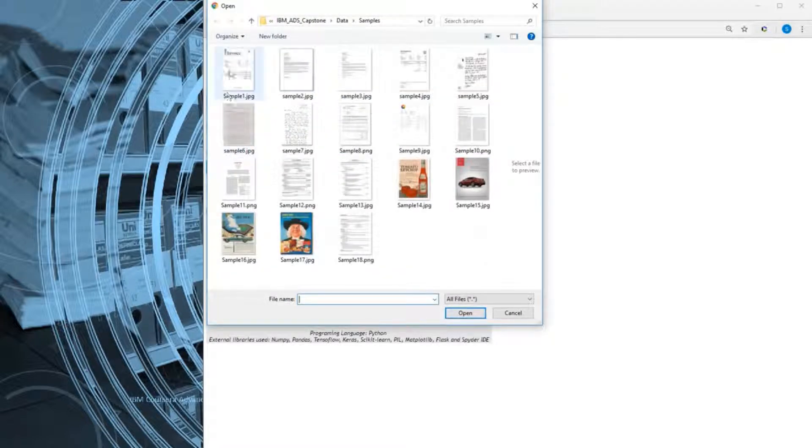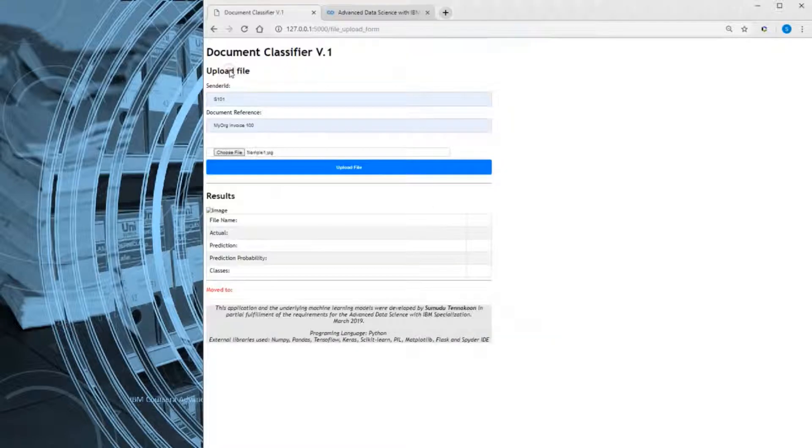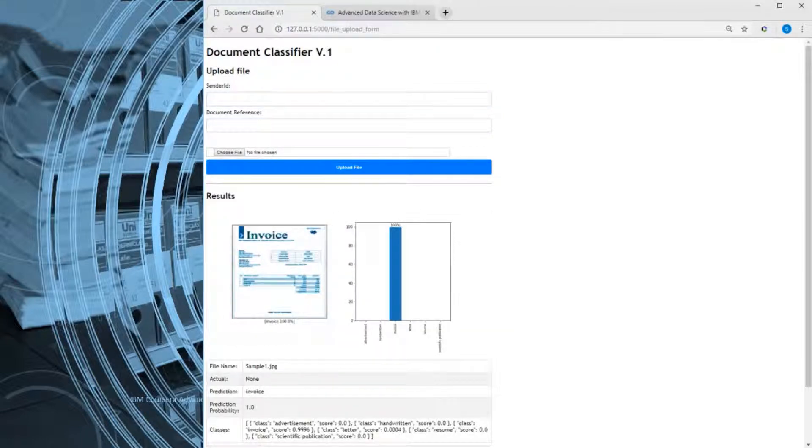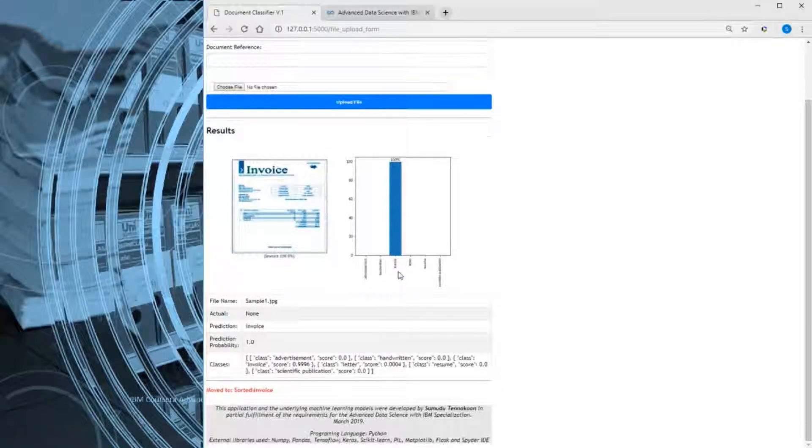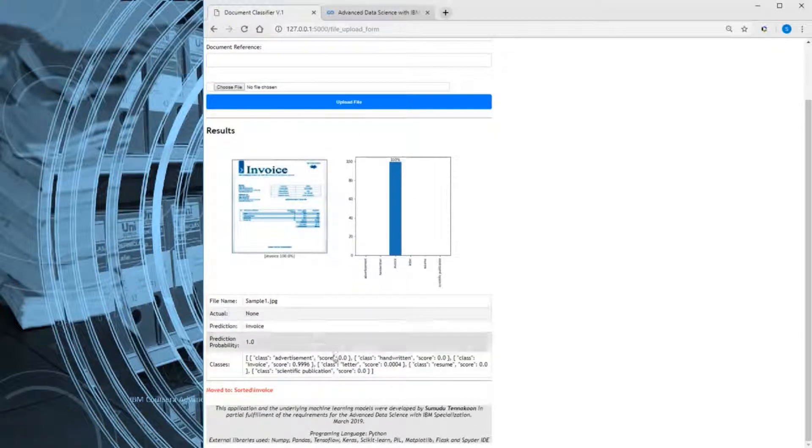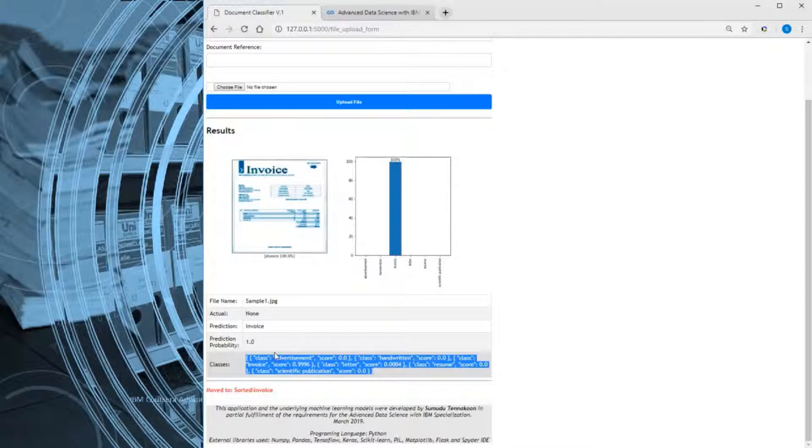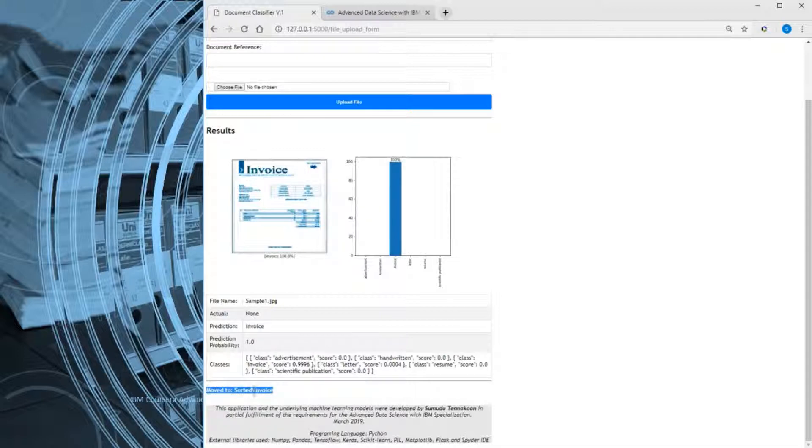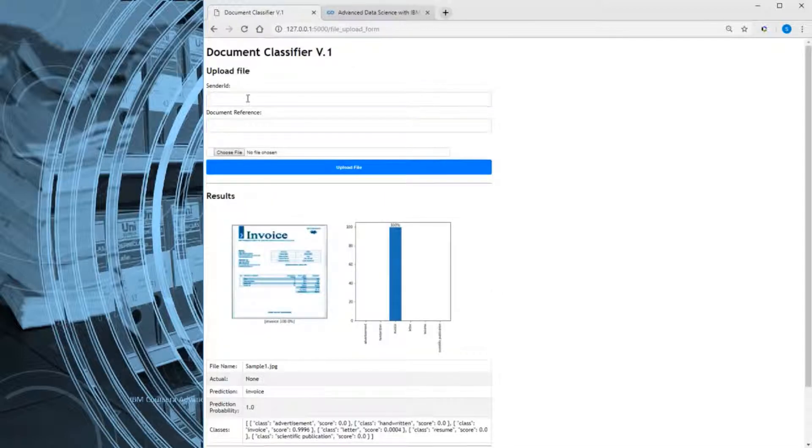This is an invoice sample file and if you click upload, the document will be uploaded to the API server and then run through our document classification model and then produce the output. This output is same as a JSON output. And also you can see the file is moved into appropriate folder. Let's look at another file, resume file.